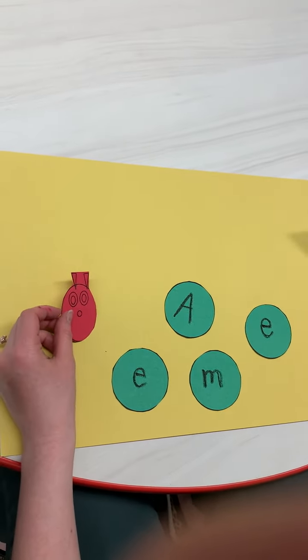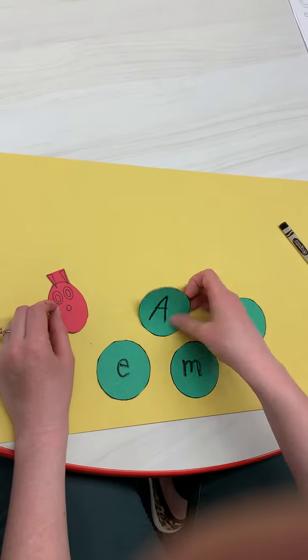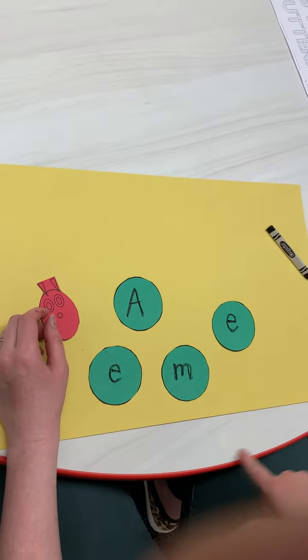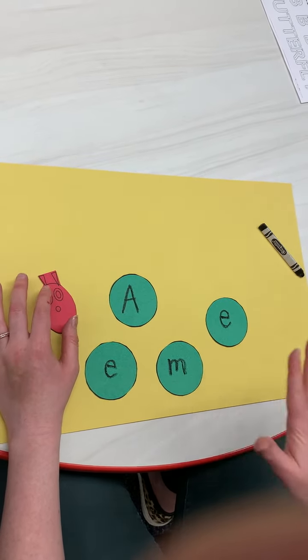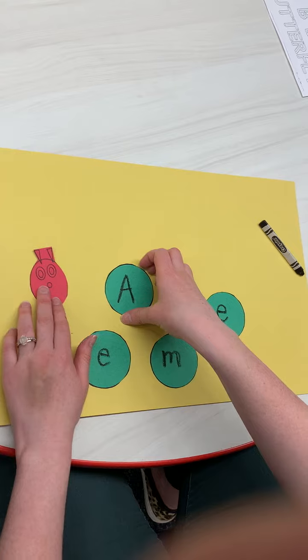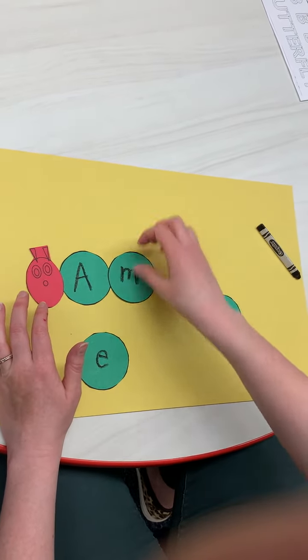Very Hungry Caterpillar head. So what you're gonna do for this one is you're gonna have your child write the letters of their name on the circles, or if they need a little bit more support, you can write the letters for them and they're just going to make the Very Hungry Caterpillar with their name.